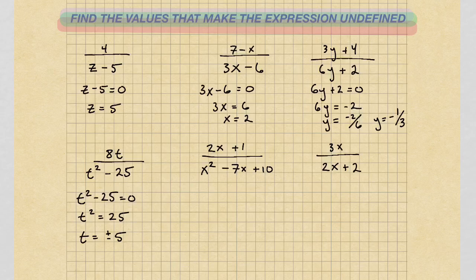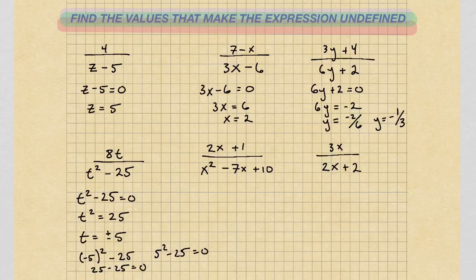So that means if you plug in negative 5 for t, you get negative 5 squared minus 25, which gives you 25 minus 25, and that equals 0. Same with positive 5: 5 squared minus 25 also equals 0. So keep in mind, if you introduce a square root, you have to include both positive and negative values.